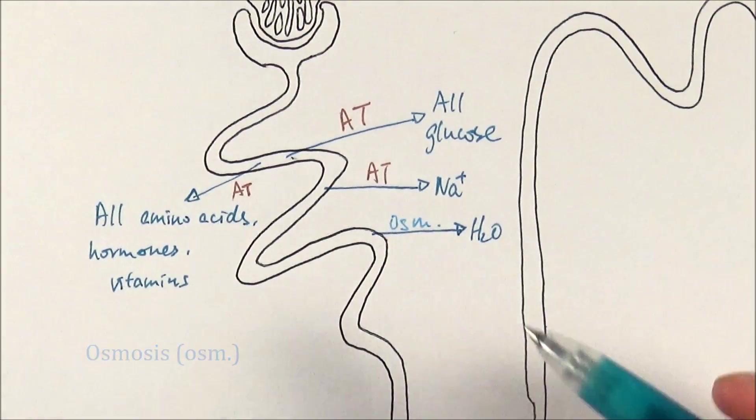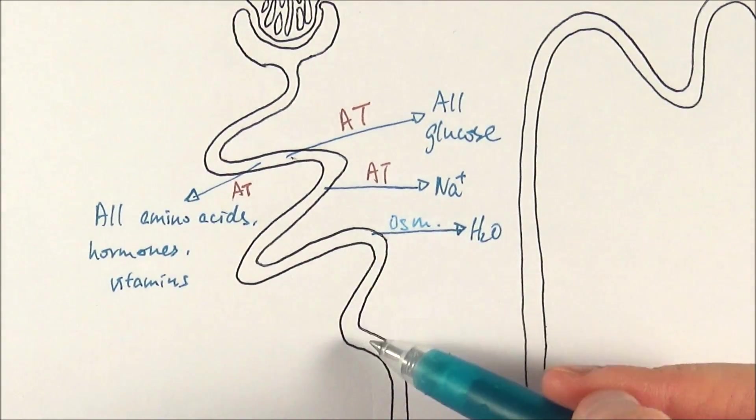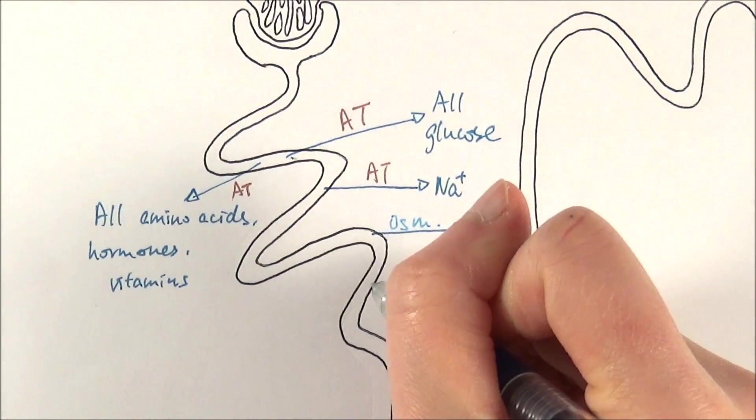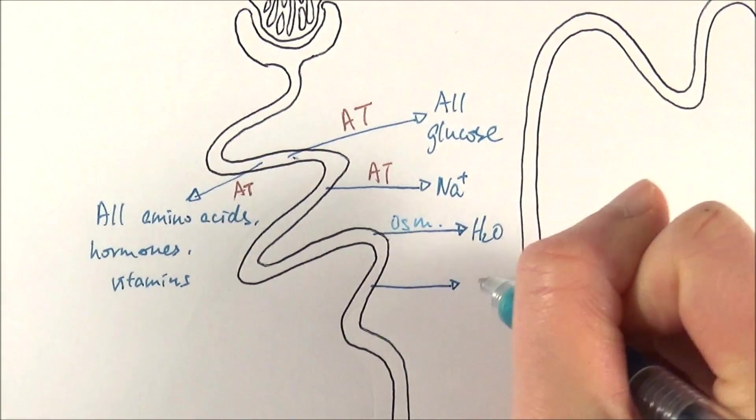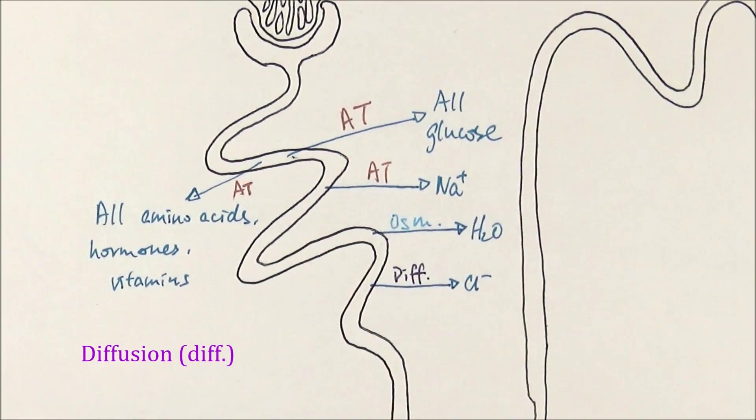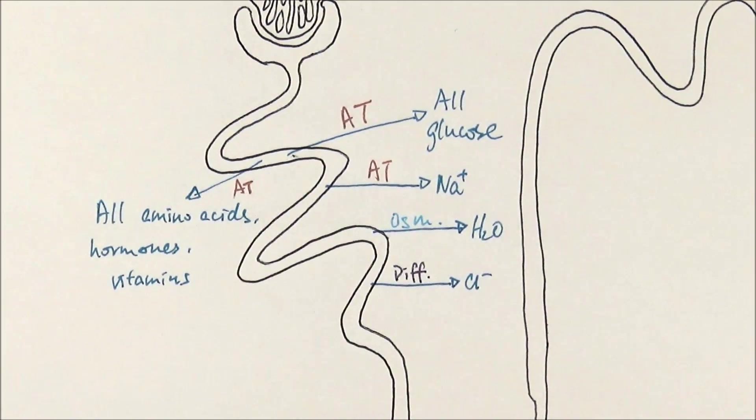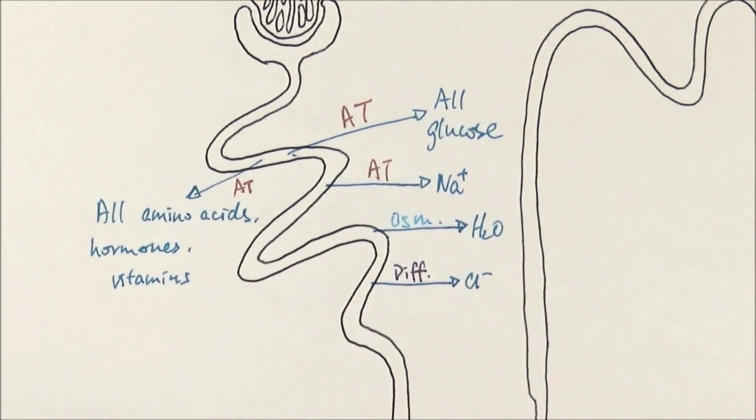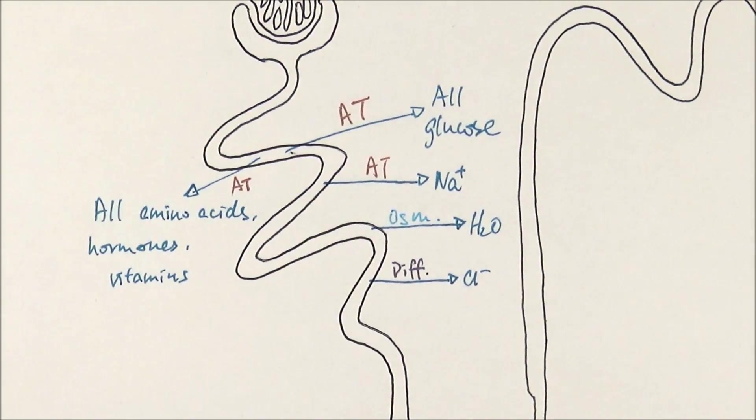In the same concept, because of the movement of the water, the filtrate becomes more concentrated and therefore chloride ions can also leave now by diffusion. As you can see, most of the reabsorption happens in the proximal convoluted tubule. In this bit, actually 50% of the urea is also reabsorbed. But that's not quite in the spec. However, it's something that you need to be aware of.